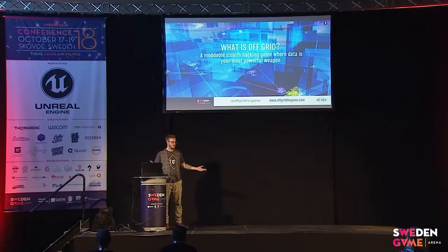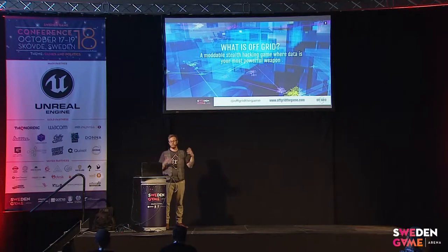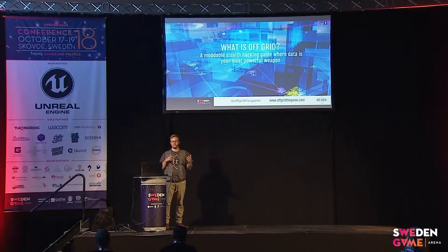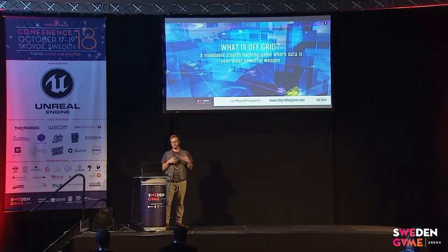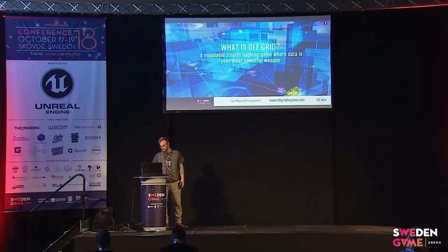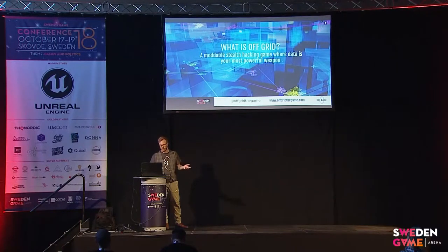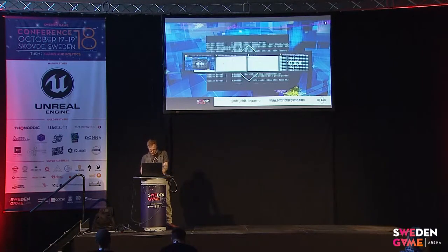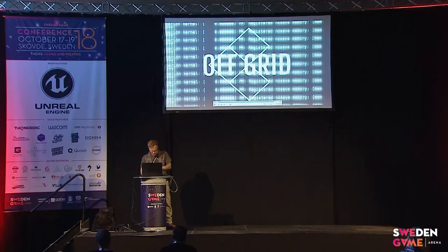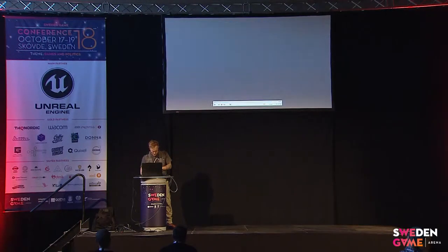What is Off Grid? Well, Off Grid is a moddable stealth hacking game where you essentially manipulate data — and the data that characters leave behind — in order to engineer the AI off of their path. You're essentially blackmailing the other characters in the game in order to make your way through it, and you do this by hacking Internet of Things devices around the game. I'll pop on the trailer quickly so you can get an impression of it.